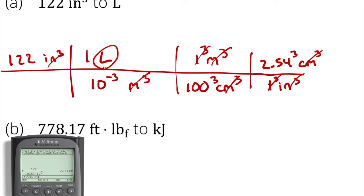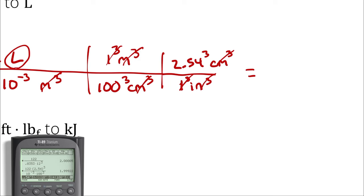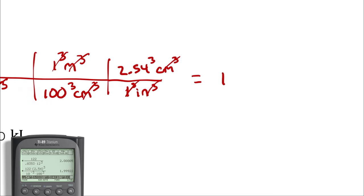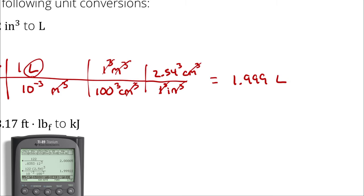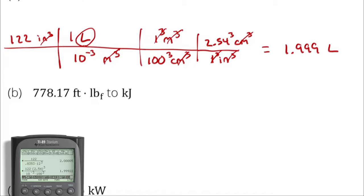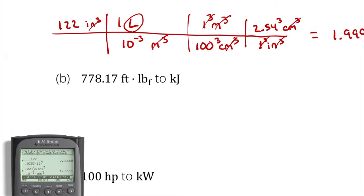So I take 122 multiplied by 2.54 cubed, divided by the quantity 10 to the negative 3rd, multiplied by 100 cubed, and that gives me 1.99922 — still about 2 liters. If we cared more about significant figures, we would have a conversation now about rounding, but we don't for now, so let's move on.